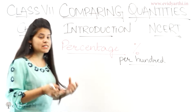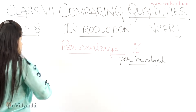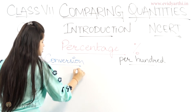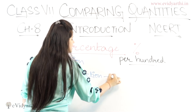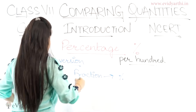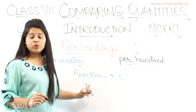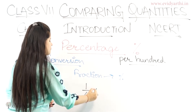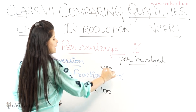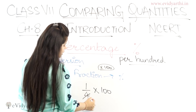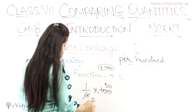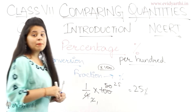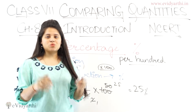Now in this chapter, what types of percentage questions will come? One type is conversion — converting fractions or decimals to percentage. If I give you a fraction, say 1/4, and you need to convert it to percentage: the easy way to convert any fraction to percentage is to multiply by 100. So 1/4 × 100 = 25%. This means one upon four equals 25 percent.